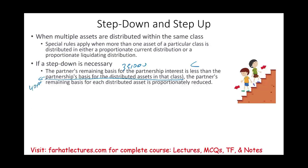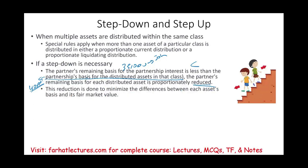What's going to happen is: the asset inside the partnership — the partnership basis for the distributed asset — is greater than the partner's remaining basis. John's basis is lower, so we have to reduce it proportionally. The reduction is done to minimize the difference between each asset's basis and its fair market value. And we're going to look at an example to illustrate this concept — this is a step-down.